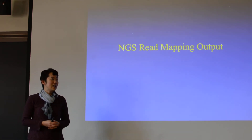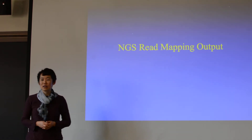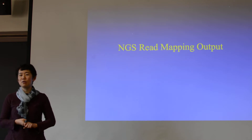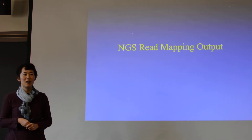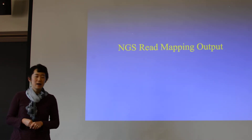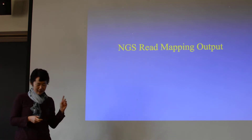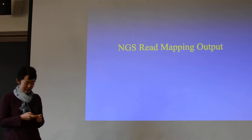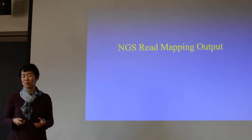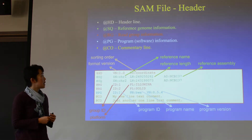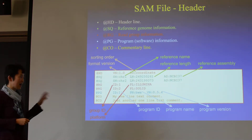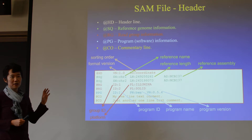In the last lecture we talked about next generation sequencing and remapping using a far smaller aligner. There was one thing we didn't get to finish last time, which is what is the read mapper's output? The most common output is something called a BAM file, or really the underlying file is called SAM.